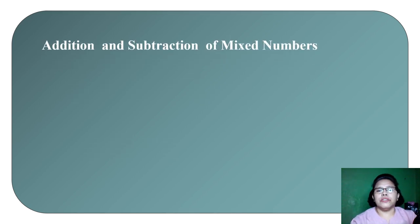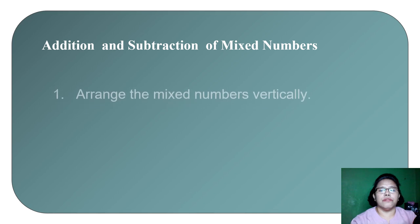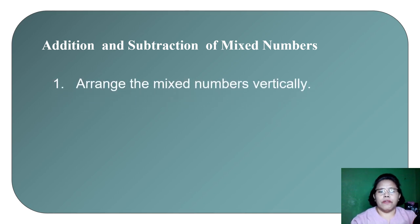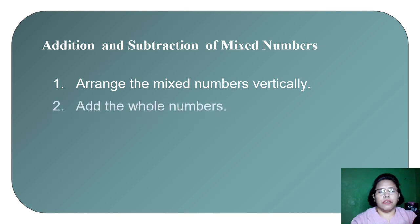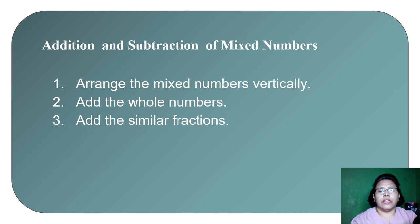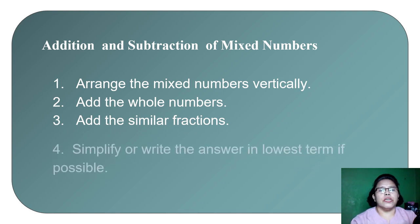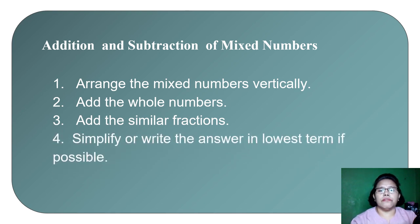Now let's have addition and subtraction of mixed numbers. So far we've been working with similar fractions only. For mixed numbers: arrange them vertically, then add the whole numbers and add the similar fractions. Simplify or write the answer in lowest term if possible.